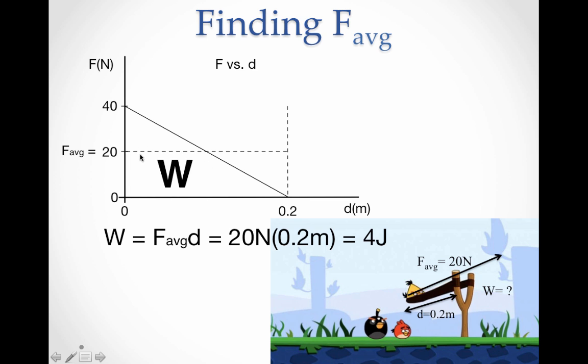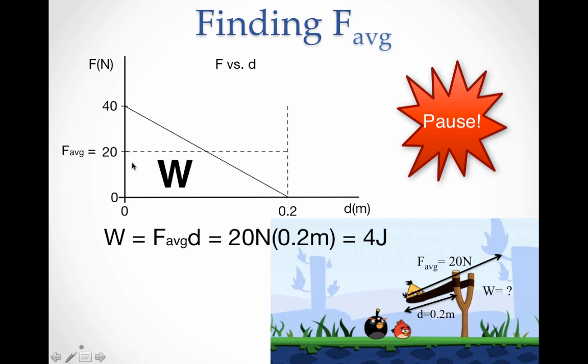And then we can look at our area here. The work is this area. If we have a triangle, the formula for a triangle is base times height divided by 2. So 0.2 times 40 would be equal to 8 joules, but then we have to divide by 2, and we would get 4 joules. So we could also take the area of this triangle, base times height divided by 2, and also get the same answer.